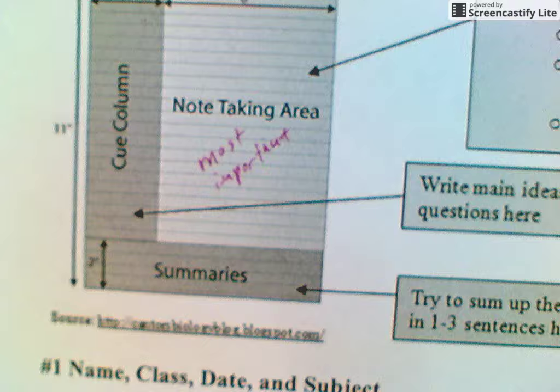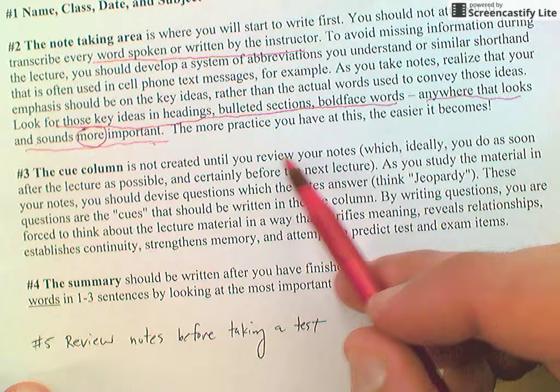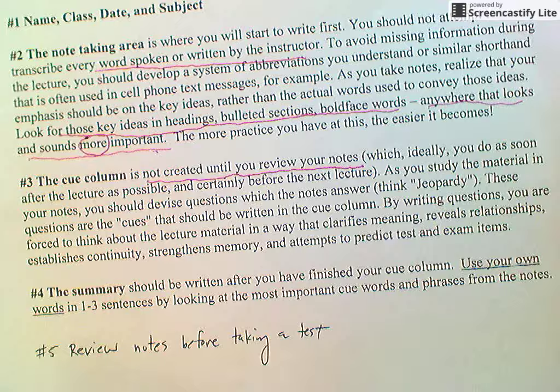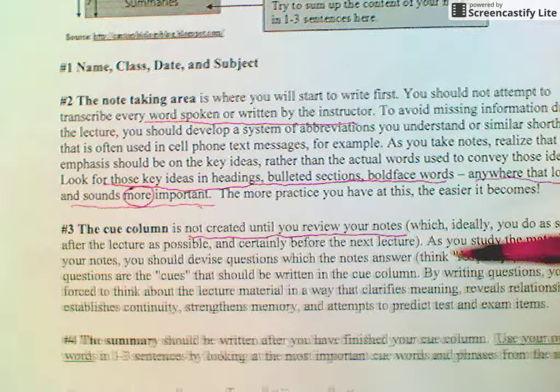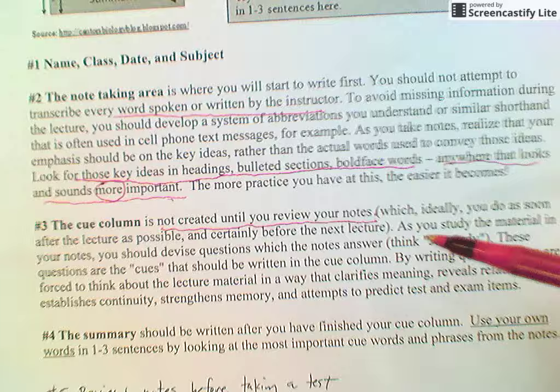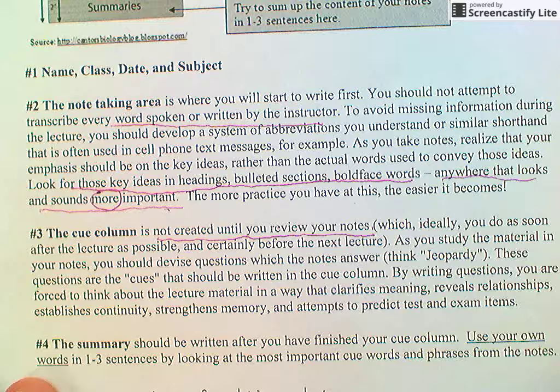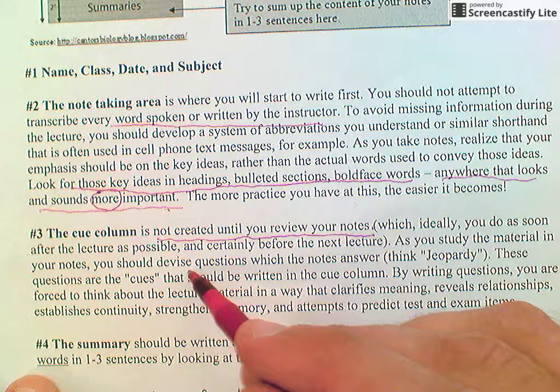Now let's go to the cue column. The cue column is not created until you review your notes — underline that: not created until you review your notes. Some students start creating the cue column while the instructor's speaking, and although there is some value to that, if you don't go back and review your notes when you're done, most of the power of the Cornell note style is lost. You really want to do this after the notes are done.